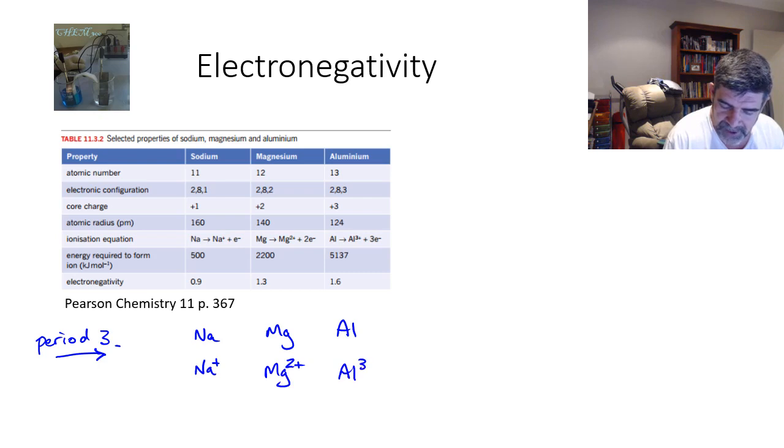We know that the first ionization energy increases as we go across the period. So it's much easier to remove an electron from sodium, making it the most active. It's not so easy to remove from aluminum. It's still a fairly reactive metal, but just not as reactive as sodium.